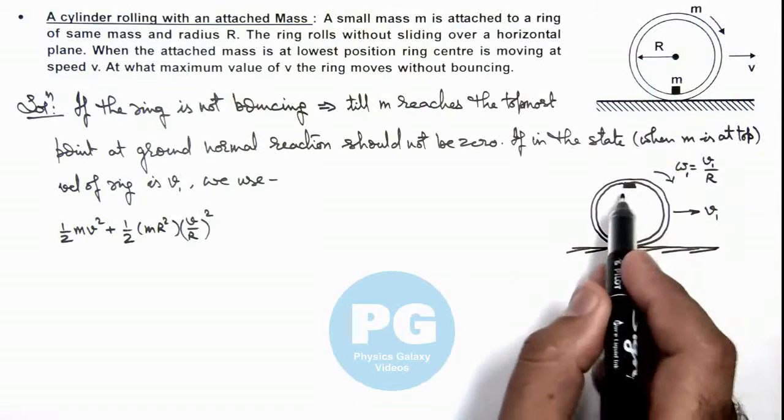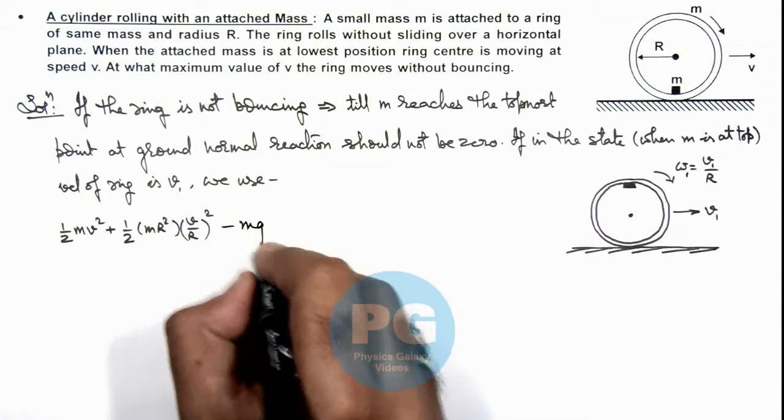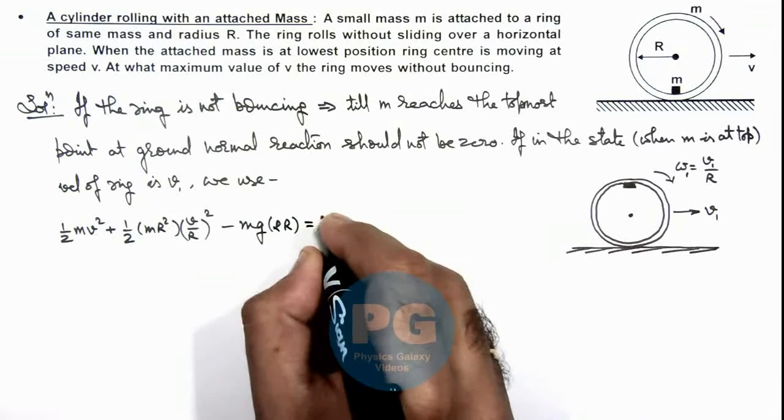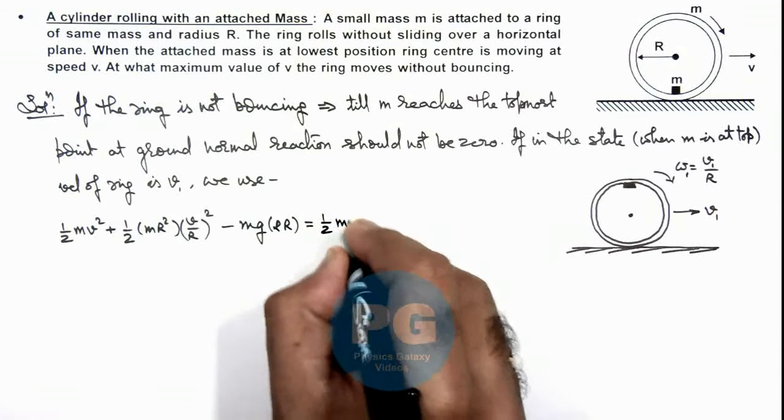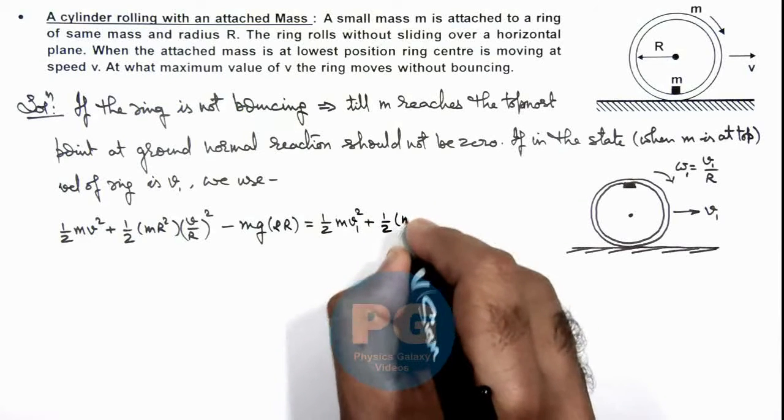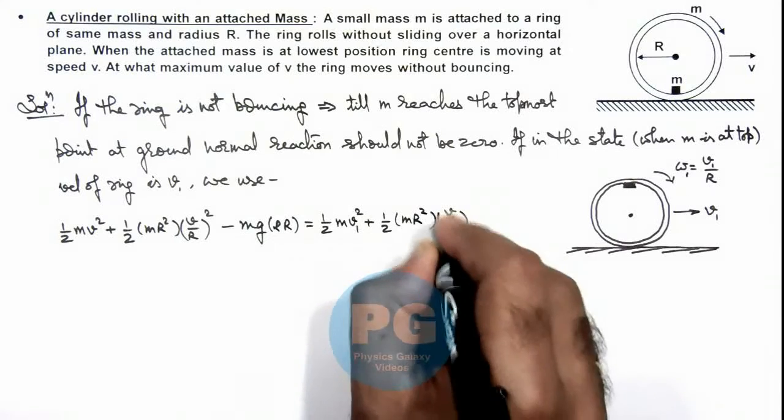When it reaches the top most point, the work done by gravity is mg multiplied by 2R, is equal to the final kinetic energy. Here we can write half m v1 square plus half mR square multiplied by v1 by R whole square.